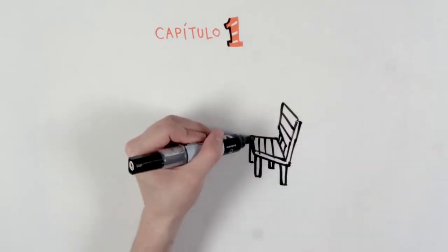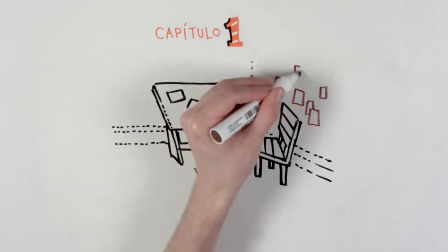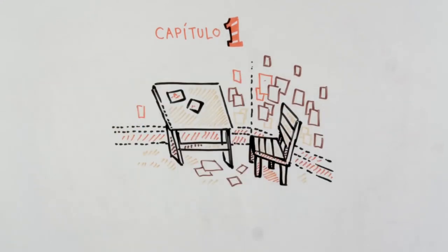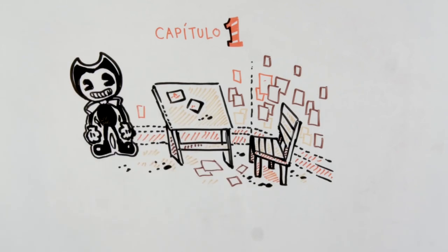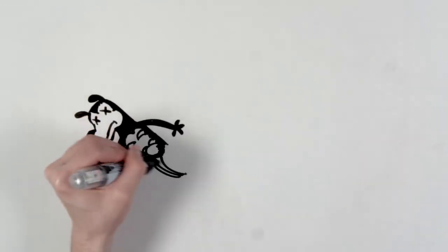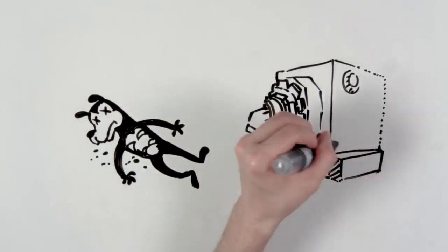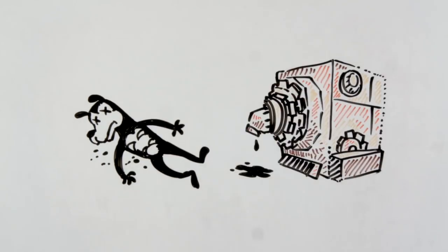On chapter one, we are at the animation studio. It seems to be abandoned. It's very dirty and full of ink, and we can see Bendy everywhere. There are also creepy messages on the wall. After finding a real-life mutilated Boris the Wolf, we have to fix the ink machine, and to do that, we need six objects.